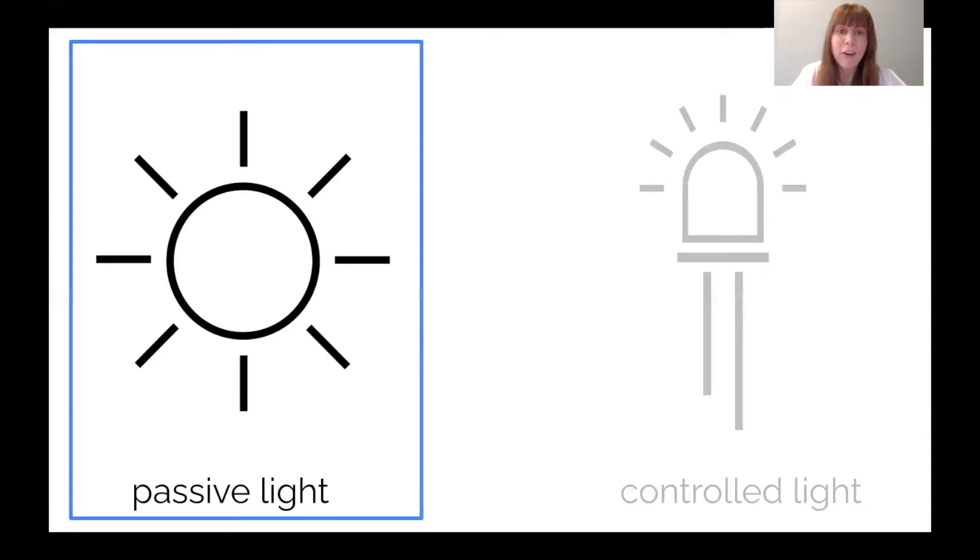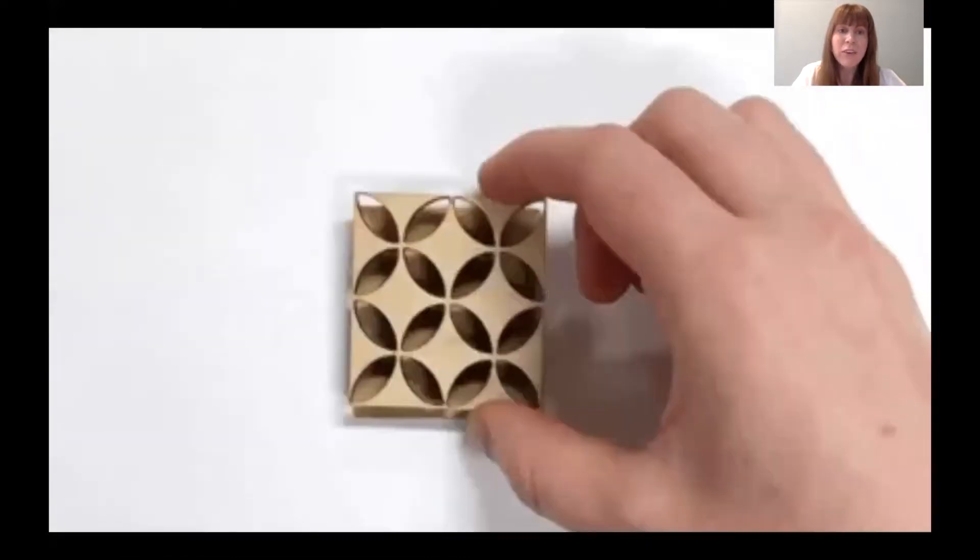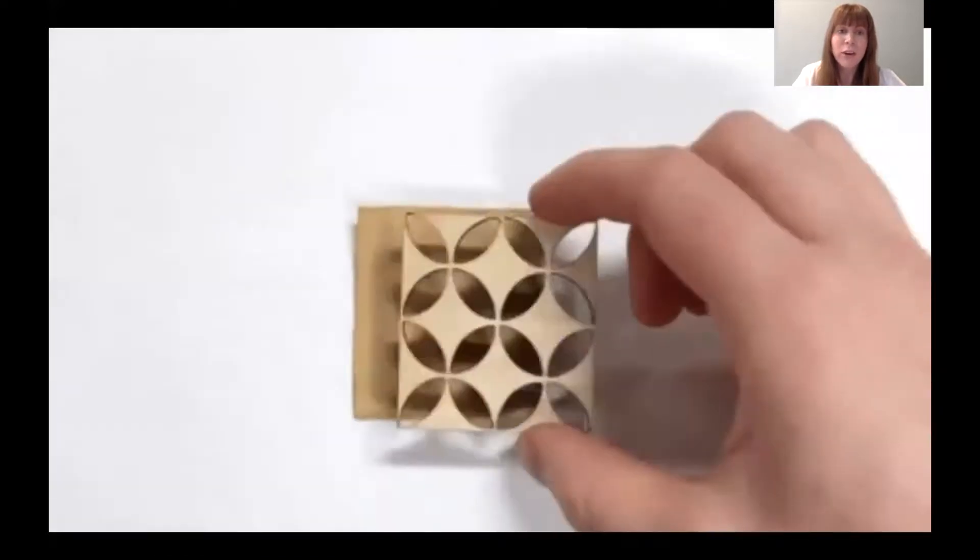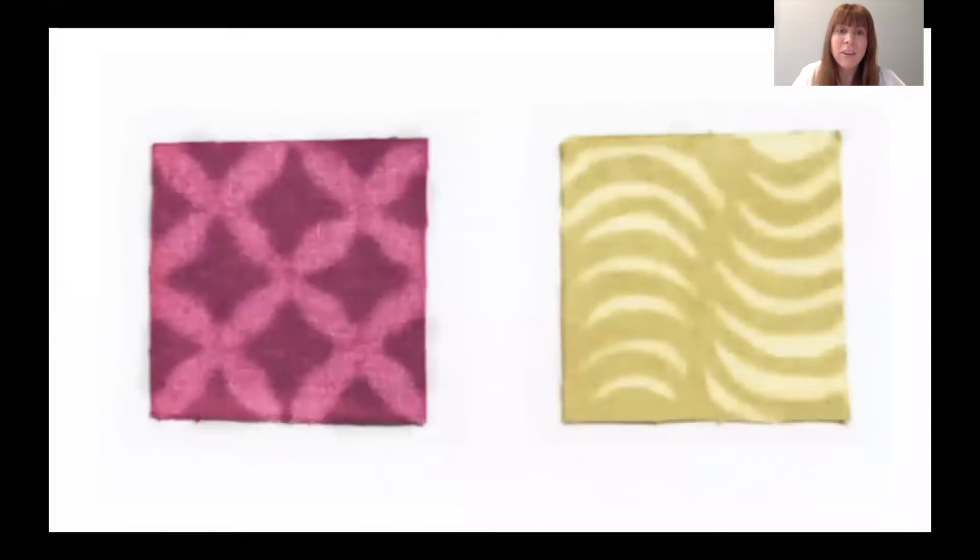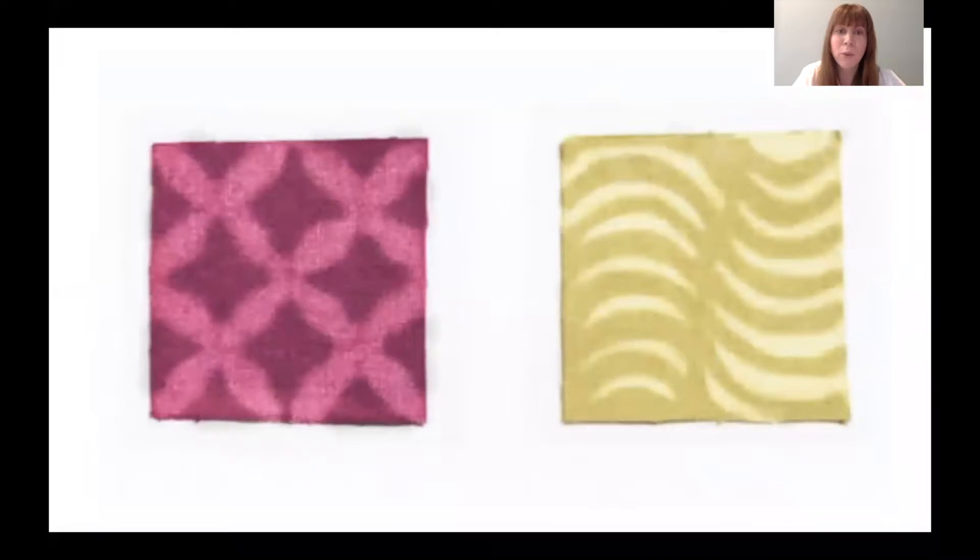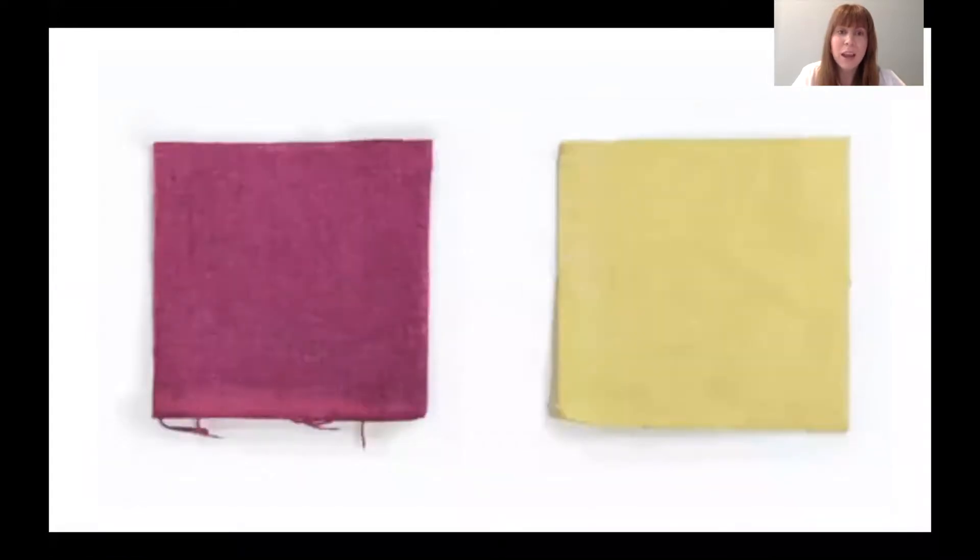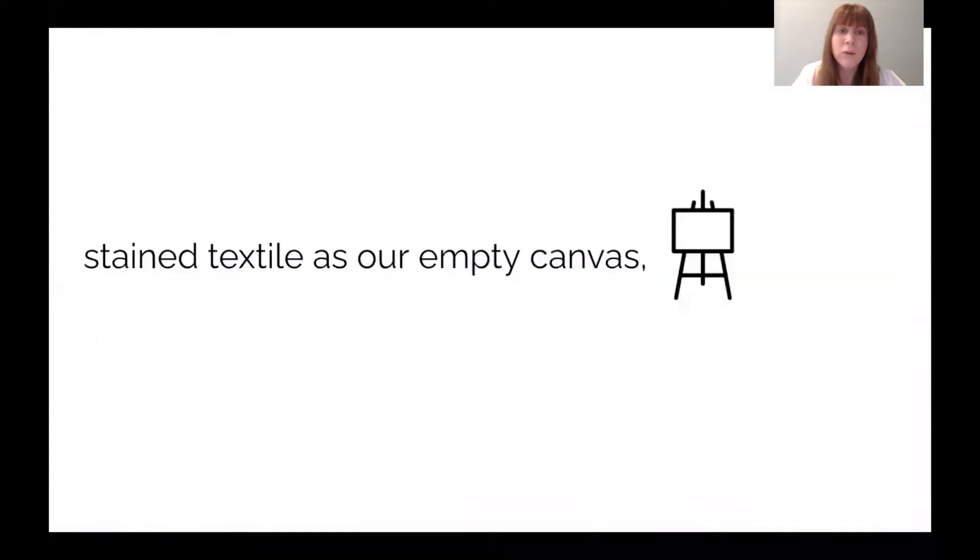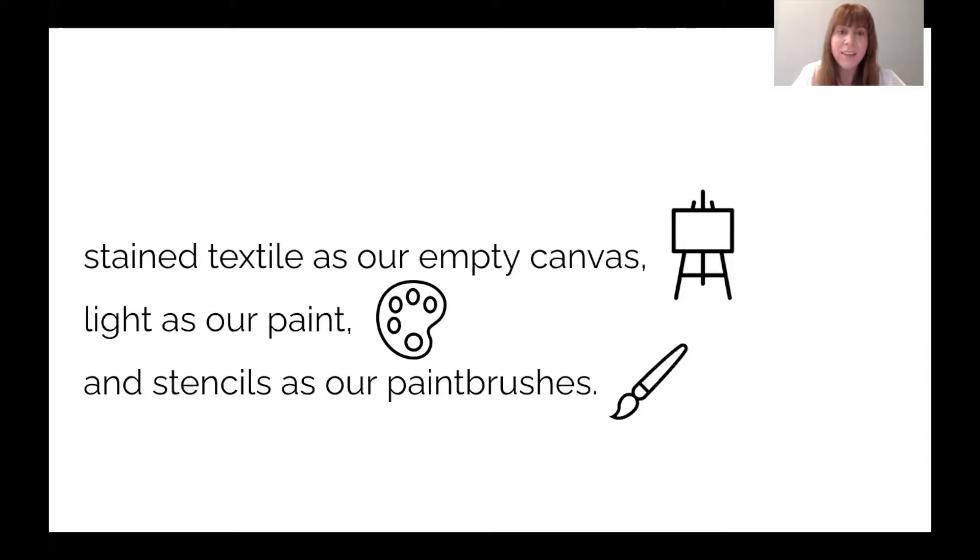For passive interactions, we used laser-cut stencils to create a set of photograms that reveal patterns through passive sun exposure over 24 hours. In this perspective, we used the stained textile as our empty canvas, light as our paint, and stencils as our paintbrushes.